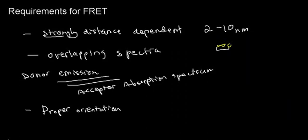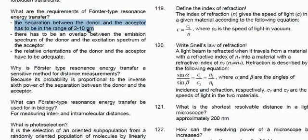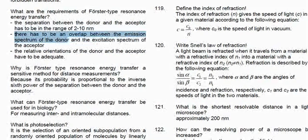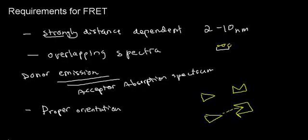The third requirement is proper orientation. Think of it in an oversimplified way: these two fluorophores need to be at a certain orientation to be able to FRET. From the minimals: the requirements for Förster-type resonance energy transfer are — separation between donor and acceptor must be in the range of 2 to 10 nanometers, there must be an overlap between the emission spectrum of the donor and the excitation or absorption spectrum of the acceptor, and the relative orientations of donor and acceptor have to be adequate.